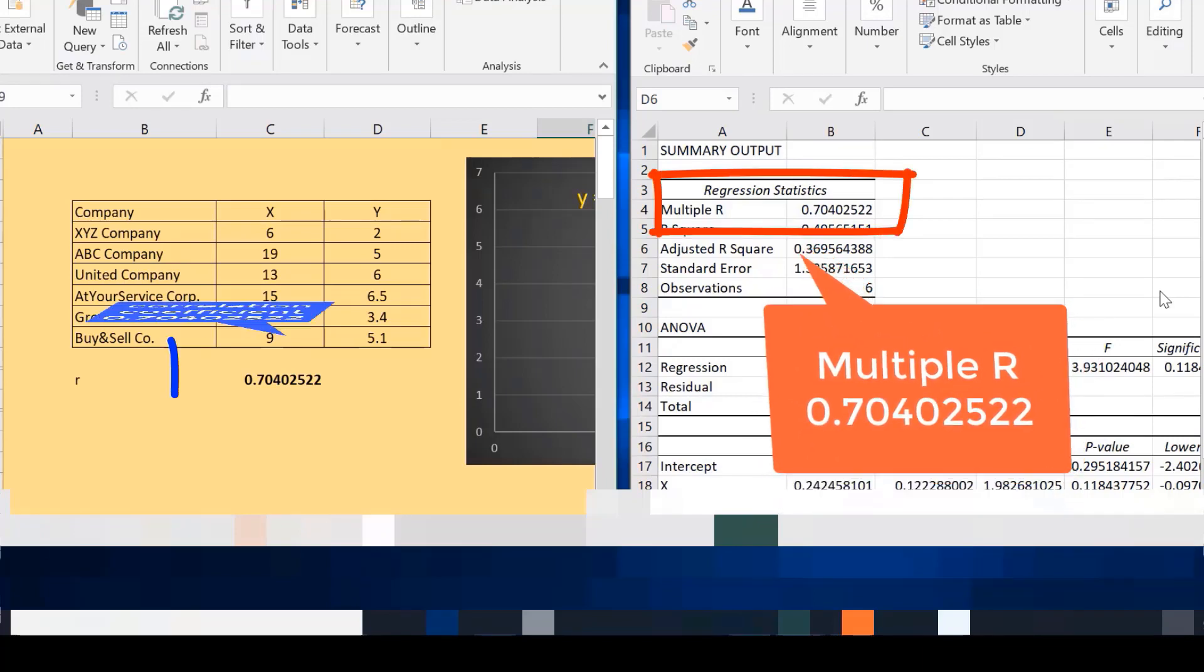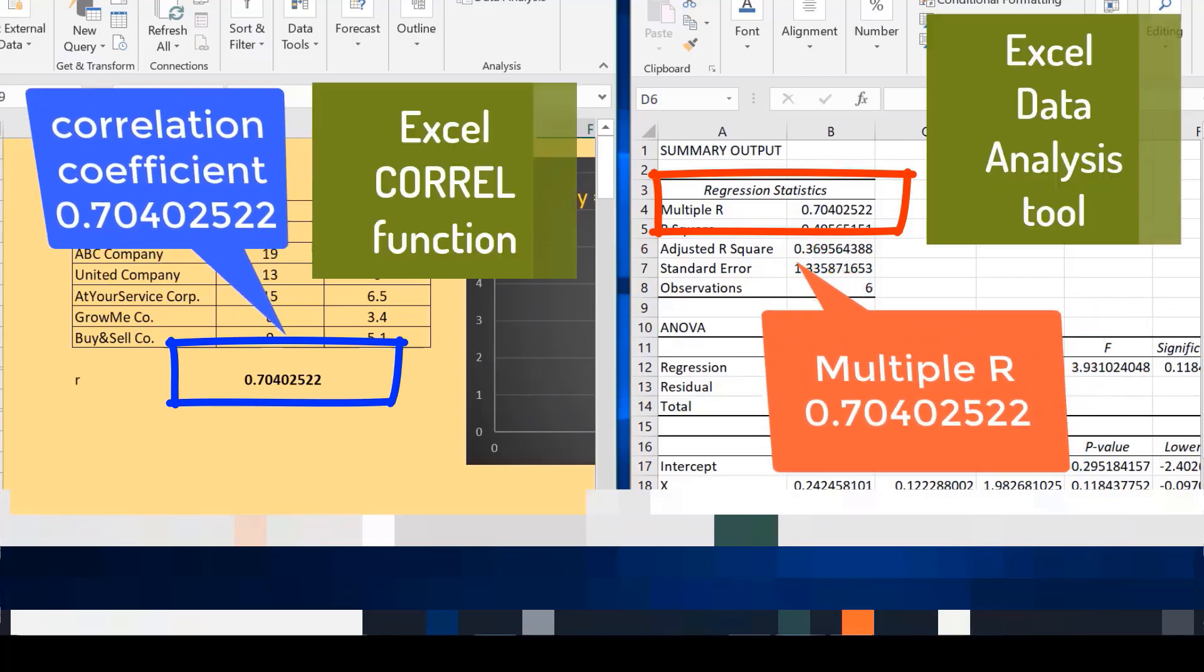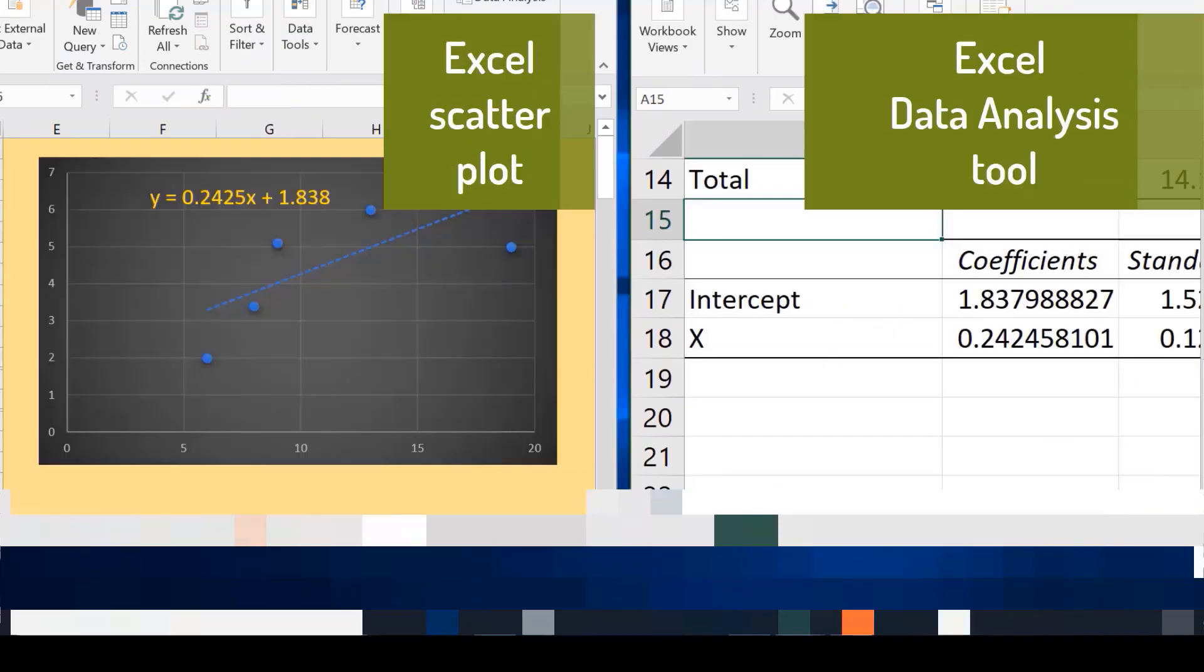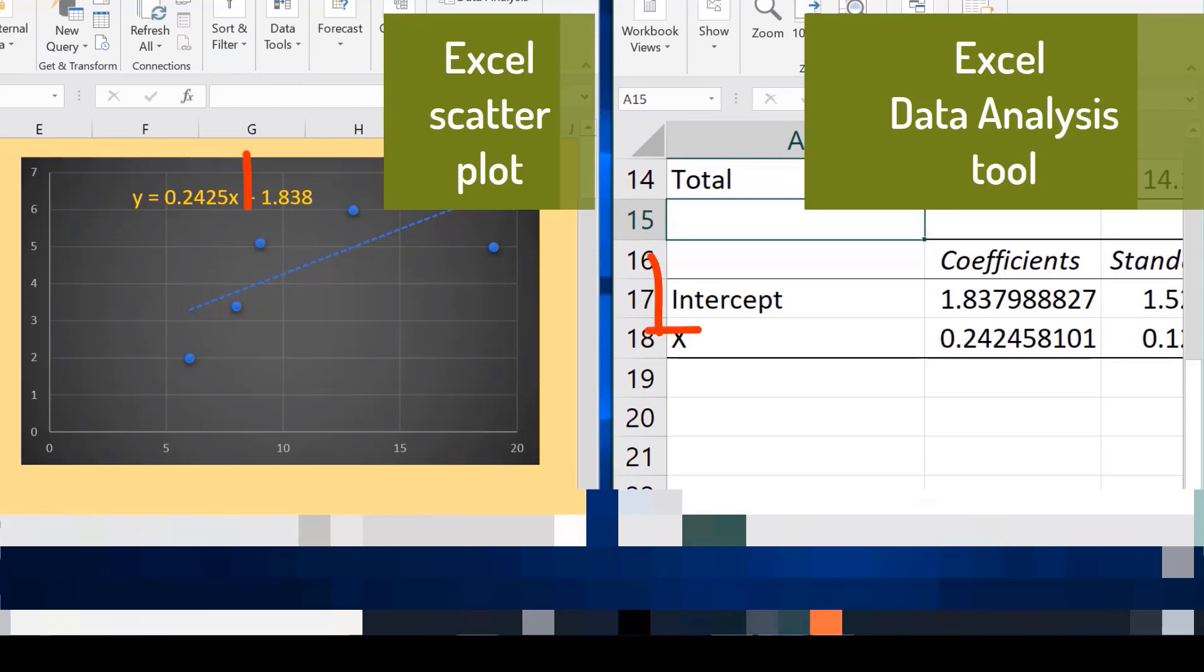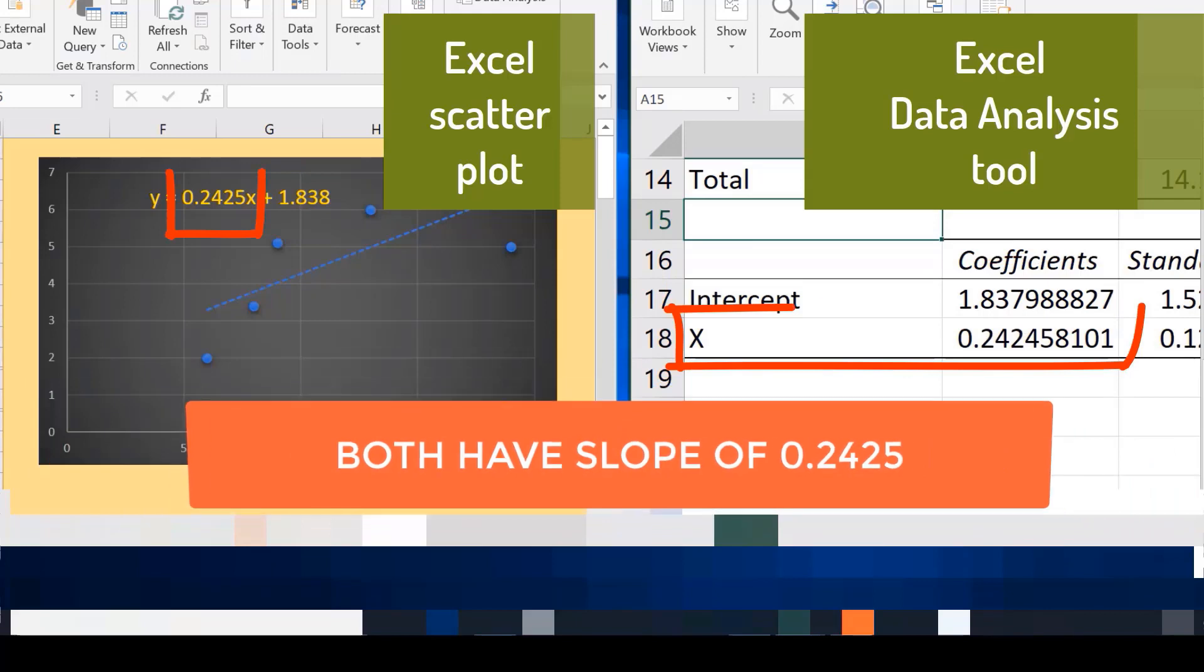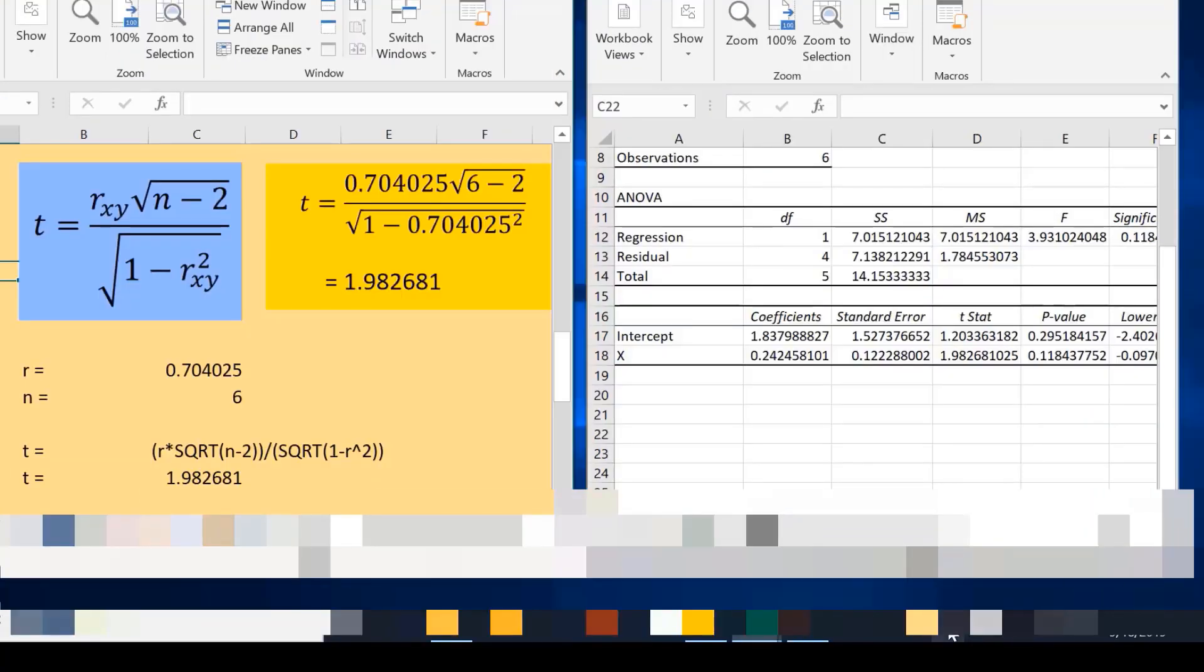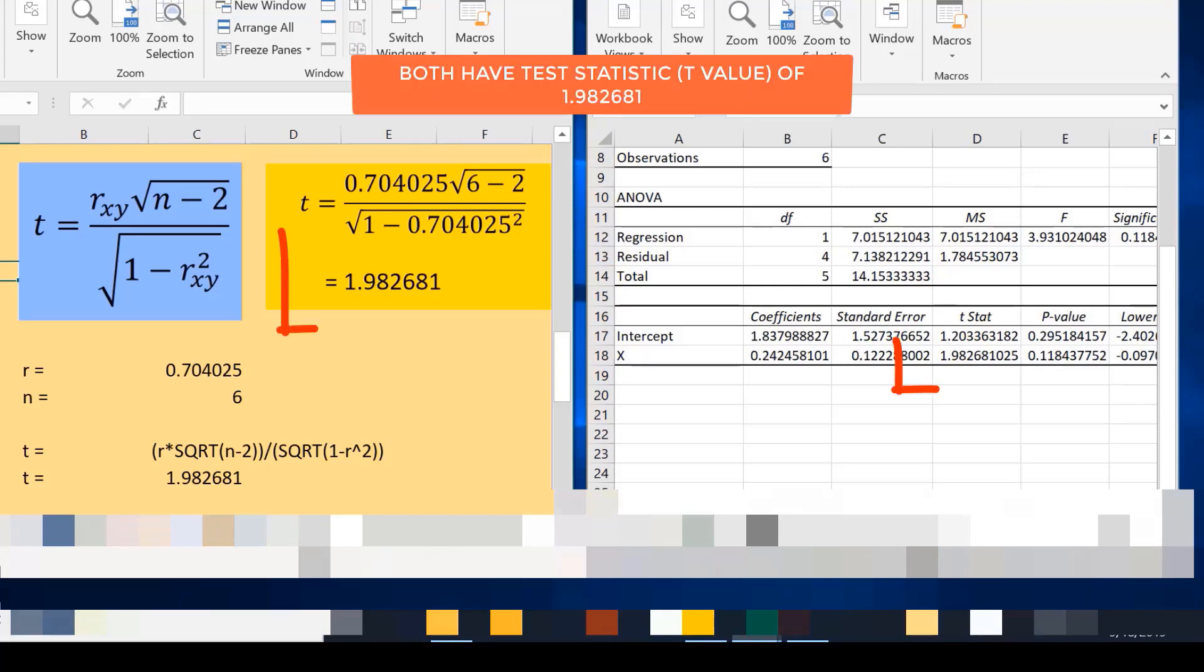Multiple R is the same with our correlation coefficient of 0.704025 computed using CORREL function. Compare regression coefficients against the scatter plot. Both have the same y-intercept of 1.838 and slope of 0.2425.